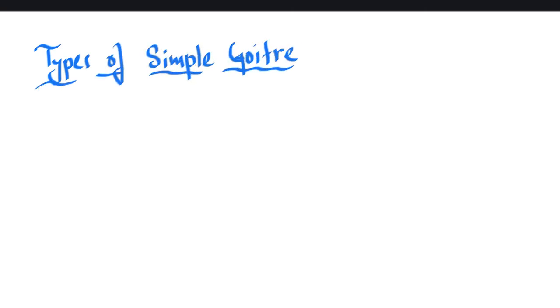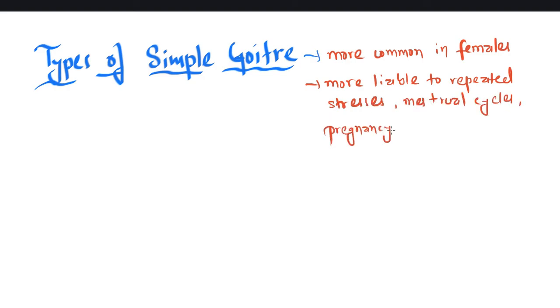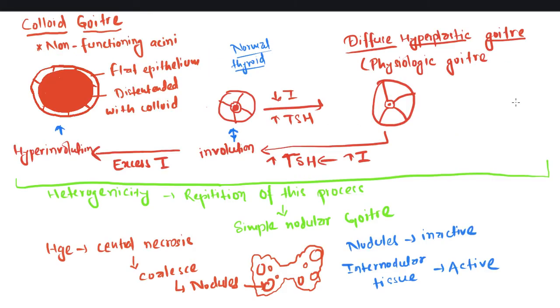Talking about the types of simple goiter, it is more common in females and is more liable to repeated stresses, menstrual cycles, pregnancy, and lactation.